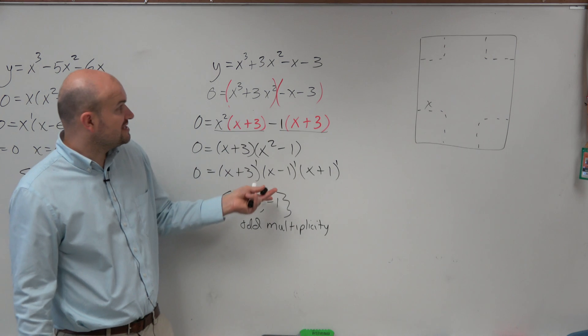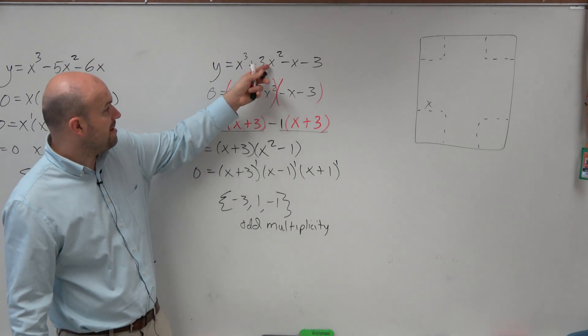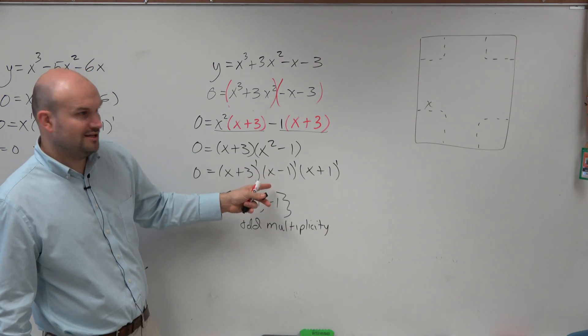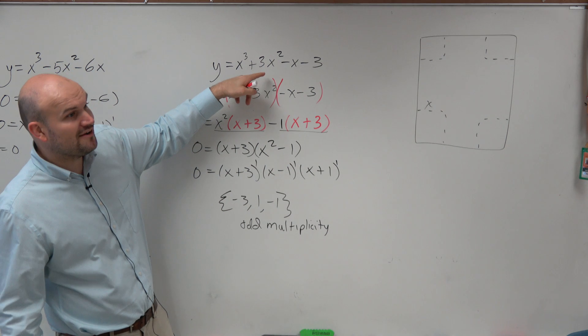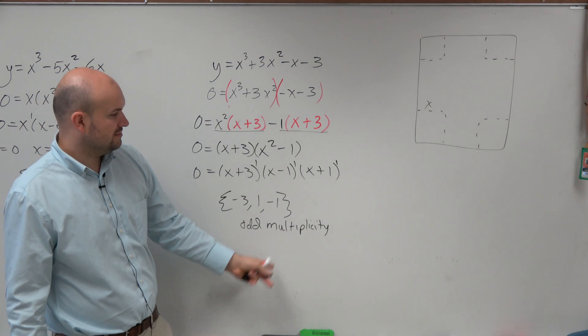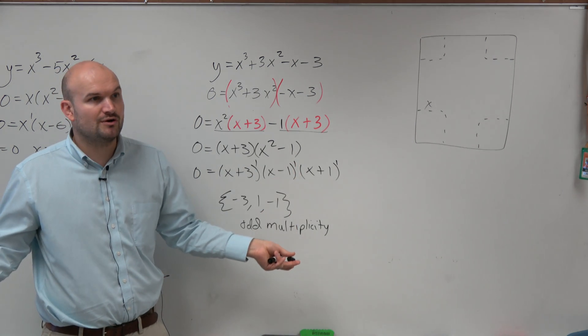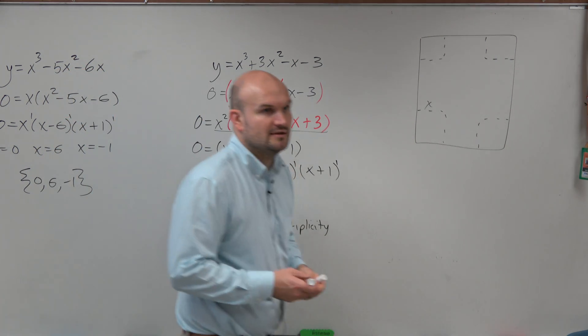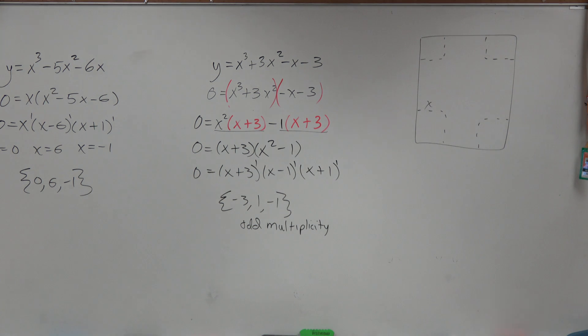So by putting it into this factored form, though, if you guys see this, by putting it into this factored form, wouldn't you guys agree? You guys could graph this equation. If I said, hey, graph this, you guys could easily factor it and then use the end behavior and the zeros and multiplicity to graph, right? So I just want to make sure I know what types of problems I can give you guys.